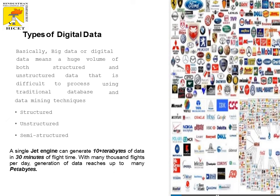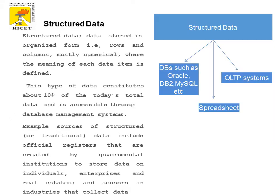Big Data is generally classified into three types: structured, unstructured and semi-structured data. Structured data are flat files normally stored in databases such as MySQL, Oracle, etc. They can even be stored in spreadsheets like Excel or other online transaction processing systems. The data are stored in rows and columns and are normally numerical, with meaningful information following a predefined schema.